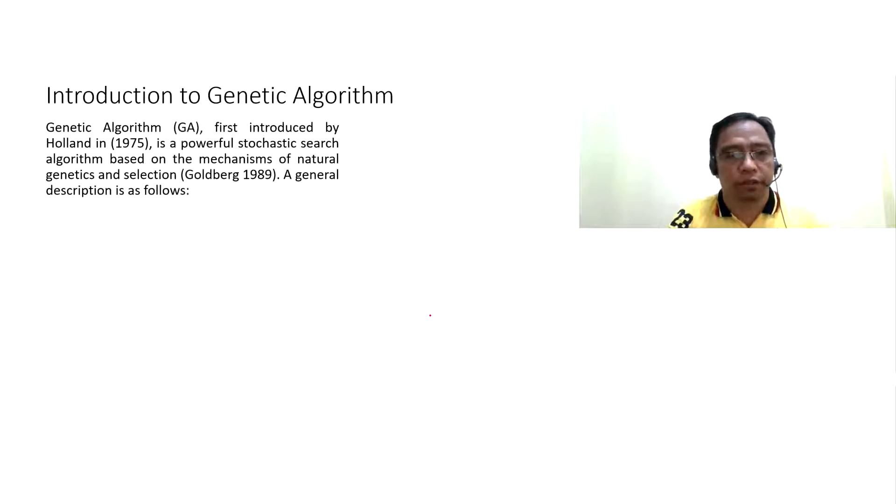Introduction to genetic algorithm. Genetic algorithm first introduced by Holland in 1975 is a powerful stochastic search algorithm based on the mechanisms of natural genetics and selection. Goldberg 1989.